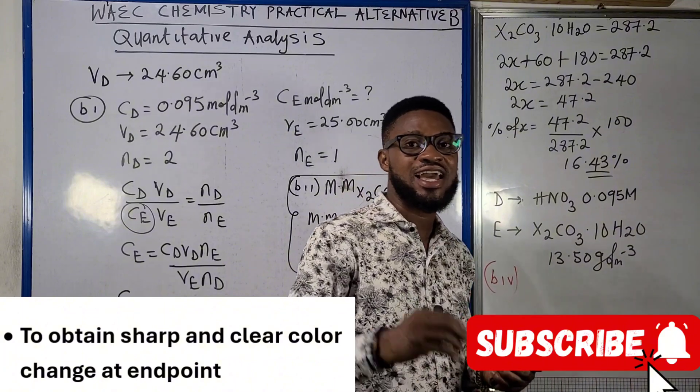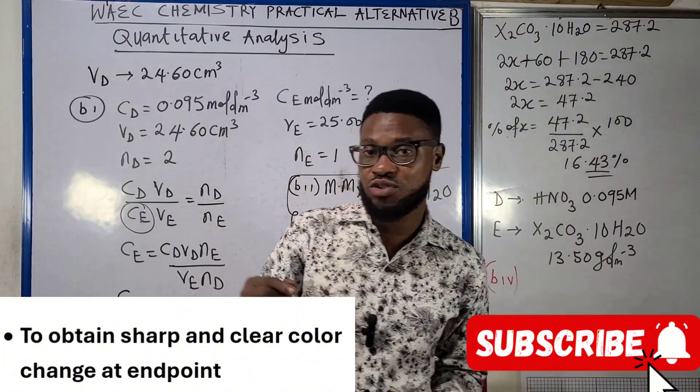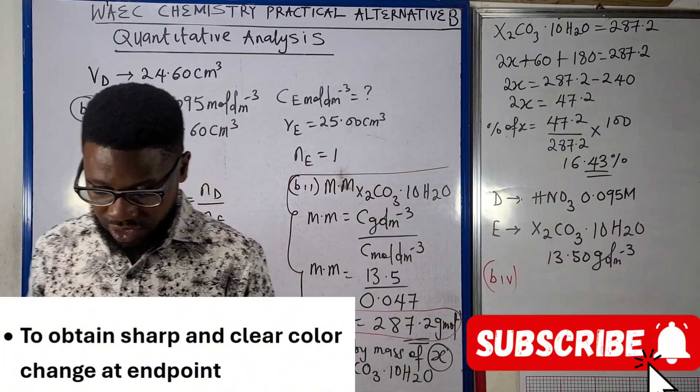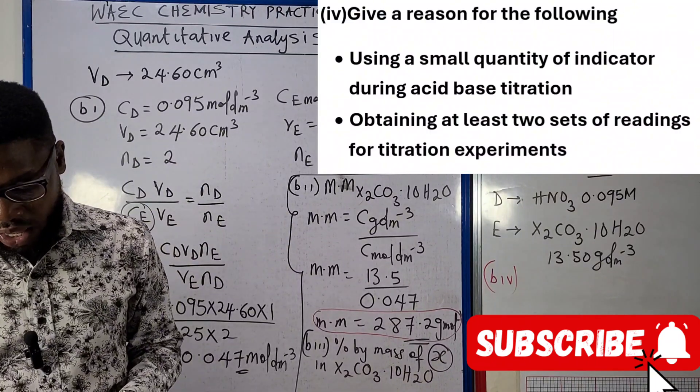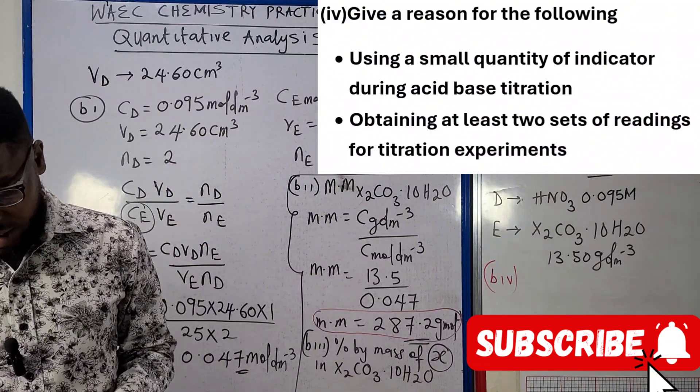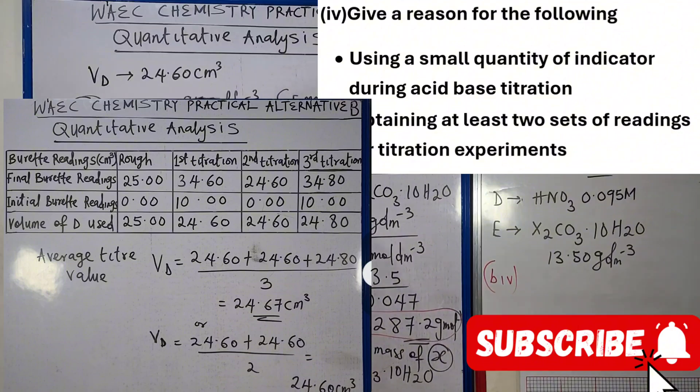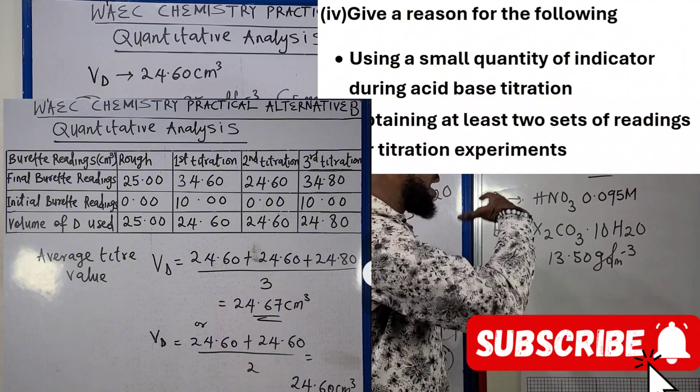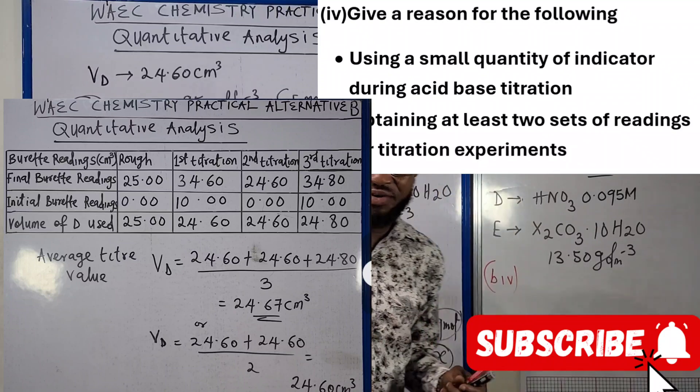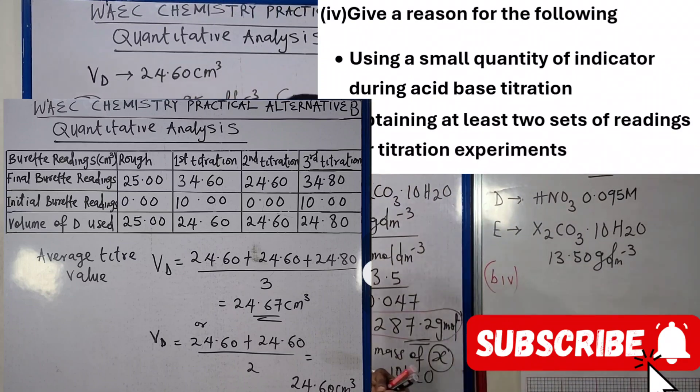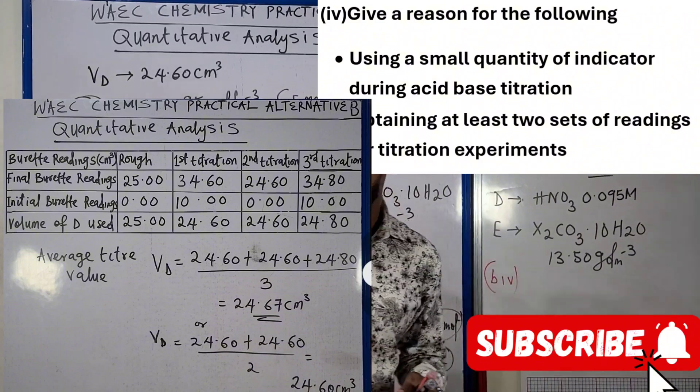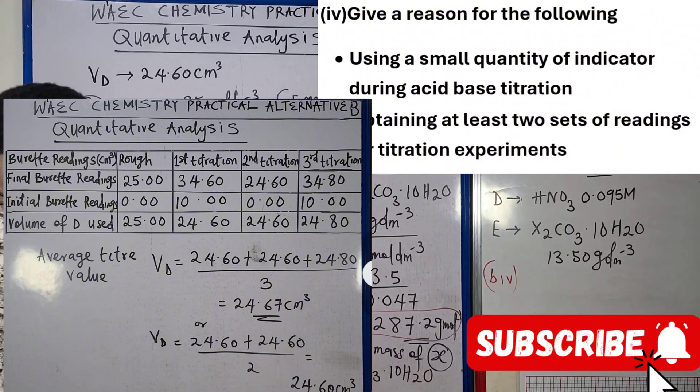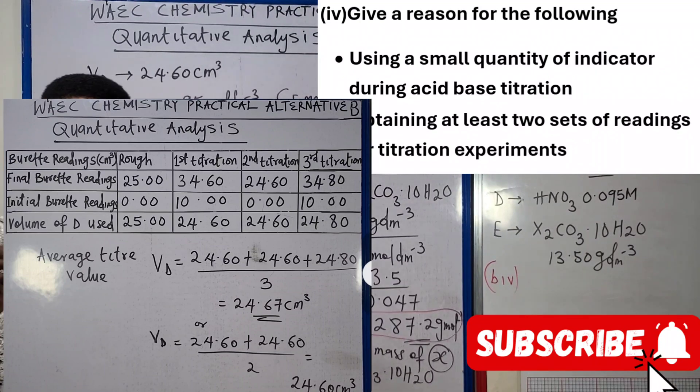The reason why we are using a very small amount of indicator here is for us to obtain a sharp and clear color change at the end point. Also, we're taught to give a reason for obtaining at least two sets of reading for titration experiment. As you can see on your screen, this is our own table which we've used to perform this experiment.